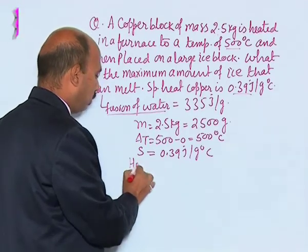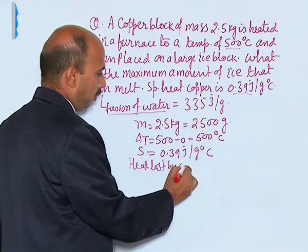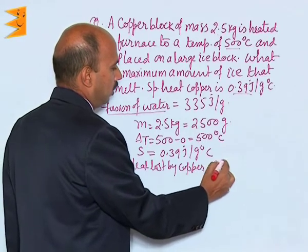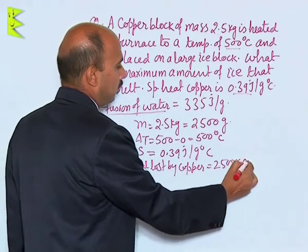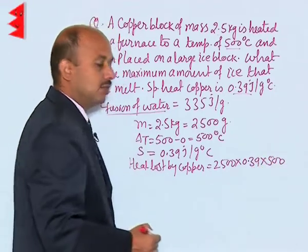So, the heat lost by copper is equal to 2500 into 0.39 into 500, that is the change in temperature.